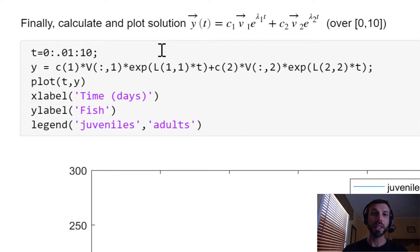Finally, to calculate and plot our solution y(t), which we already know is going to be C1 times the first eigenvector times e to the first eigenvalue times t, plus a similar term for the second eigenvalue and eigenvector. We're just going to plot this over the interval 0 to 10 for now. We're going to translate this equation into MATLAB code, which is done in the second line of the script below.